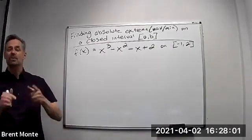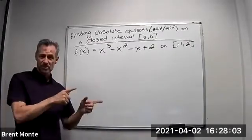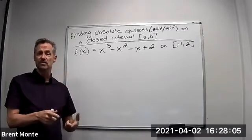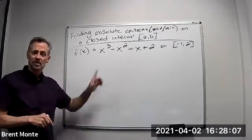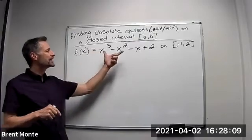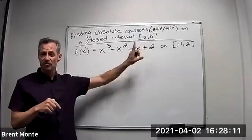Hi everyone, Professor Montebeck and we're going to talk about how to find absolute extrema, so maximum and minimum values on a closed interval from a to b. So I've got a function up here, we're going to find the absolute extrema on the interval from negative one to two.